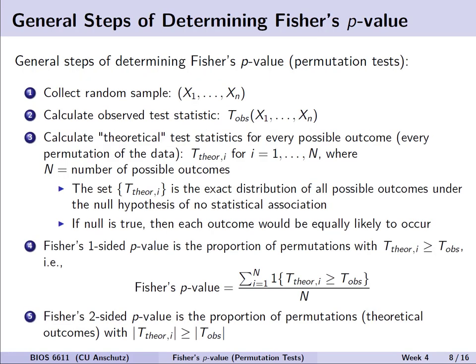There is a general framework we can use in determining Fisher's p-value. The general steps we can follow is that we first collect some random sample, denoted as x1 up to xn. From this observed sample we can calculate a test statistic, which we might call T_obs, from those observed random samples that we collected. For example, maybe it's the sample mean.